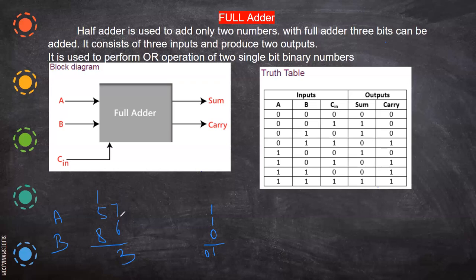How will we add? Six plus seven is thirteen, so three here, and then you will have a carry — a third digit. Here you have only two digits to be added, whereas when there is a carry you have three digits to be added. So the first position is a two-bit addition, whereas when there is a carry it becomes a three-bit addition.